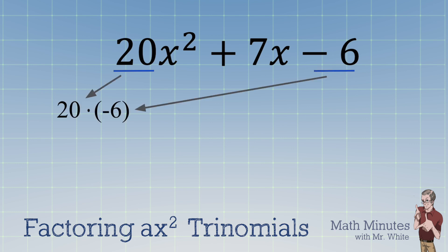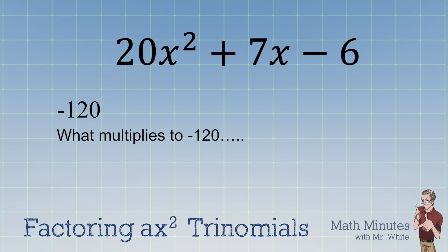20 times negative 6 is negative 120. Now ask yourself, what multiplies to be negative 120 and adds up to be 7, which is what that middle term happens to be in this problem?